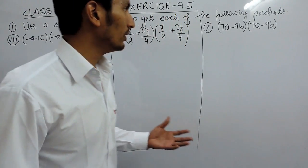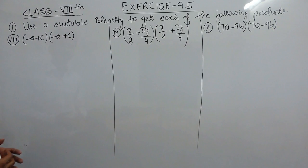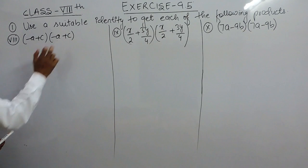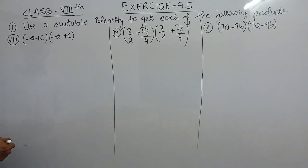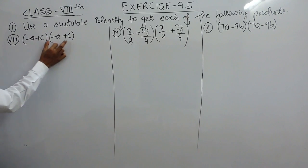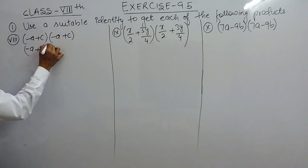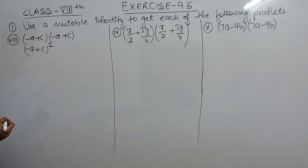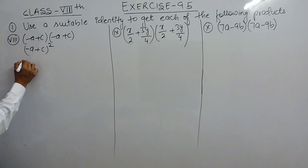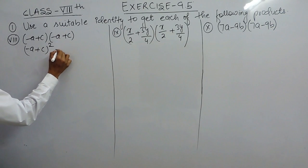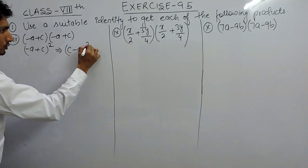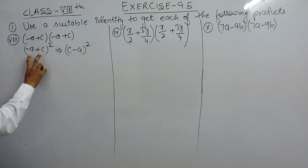In this video we are going to solve the last three parts of question number one of exercise 9.5. You have to use a suitable identity to get each of the following products without actually multiplying. These two terms are the same, so this can be written as minus a plus c whole square, which is the same as c minus a whole square — the sign remains the same.